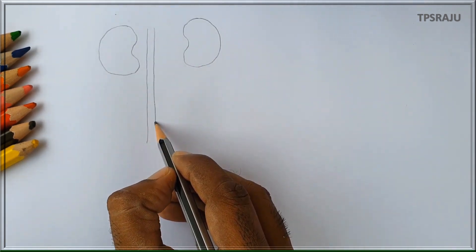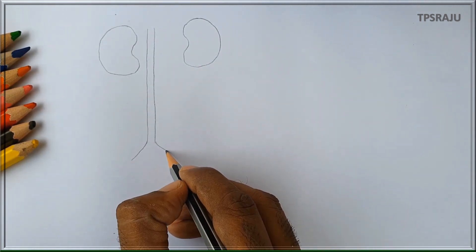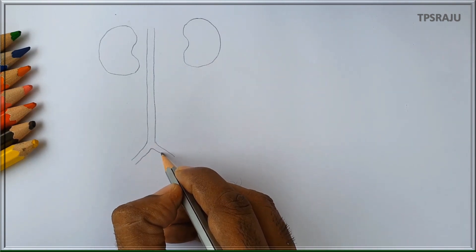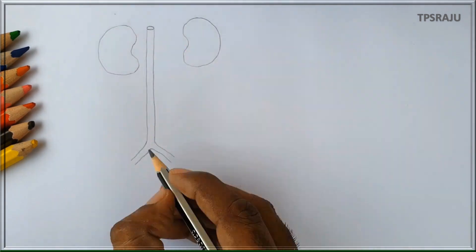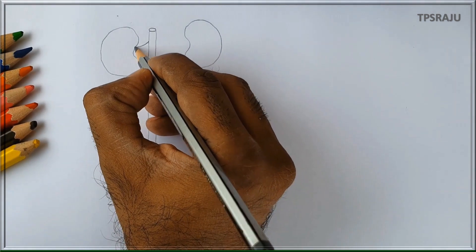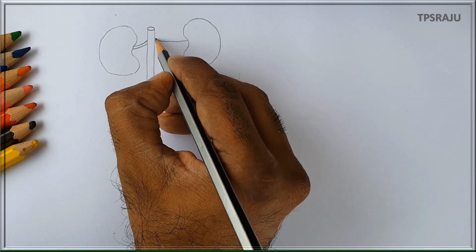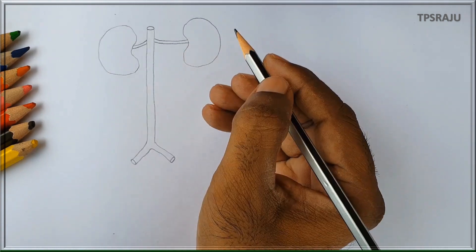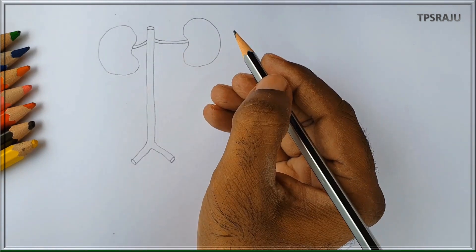Dorsal artery passes through the space present between the two kidneys. This is dorsal artery. Two renal arteries formed from the dorsal artery enter into each kidney one by one.